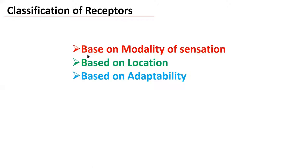We have discussed the classification of receptors based on modality of sensation. Today we will discuss the classification of receptors based on location and based on adaptability.